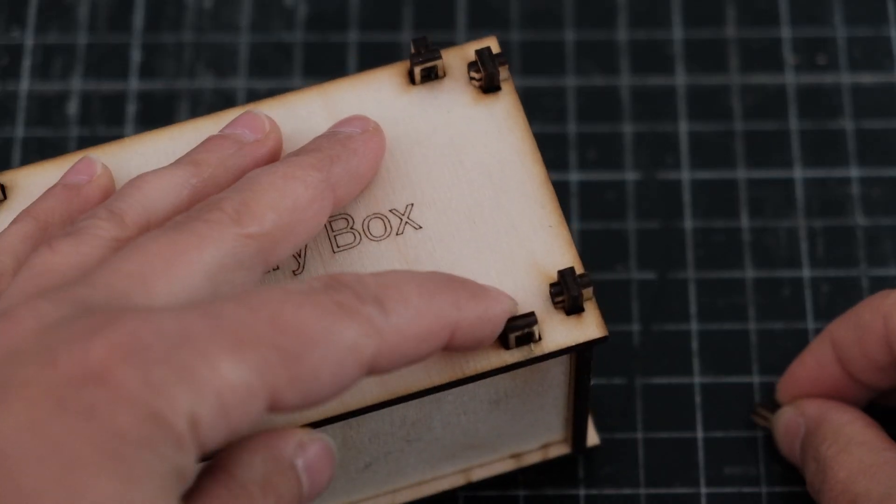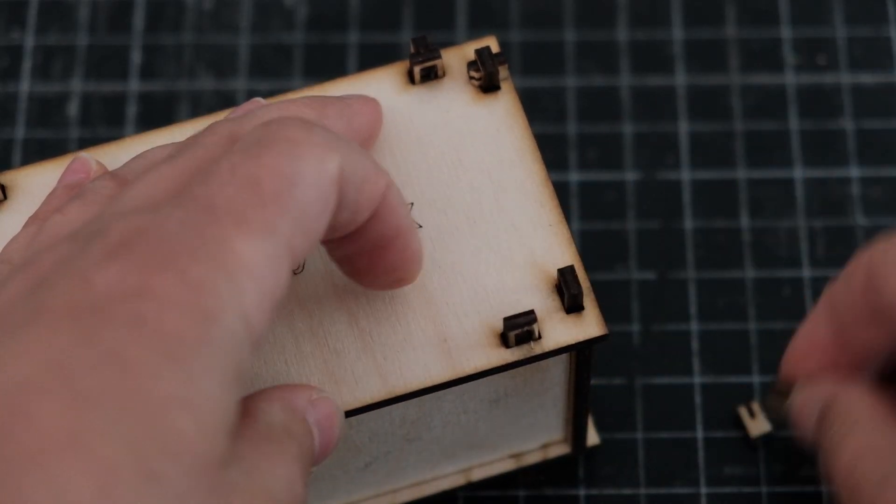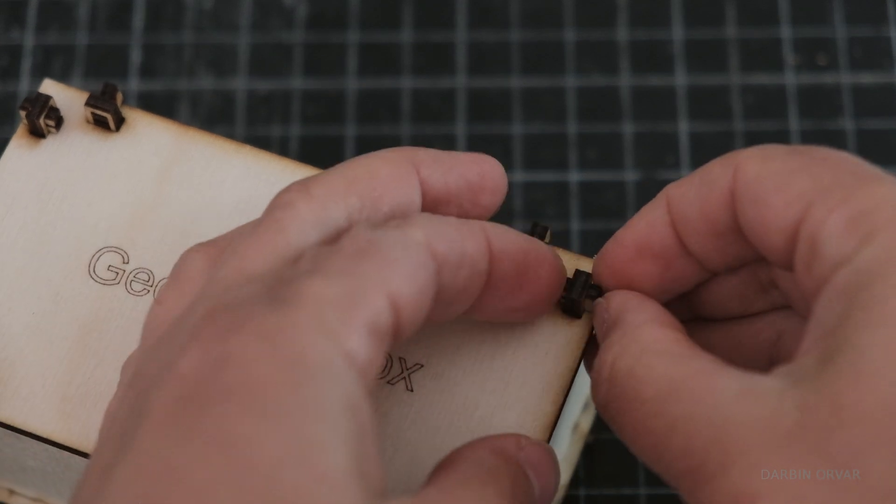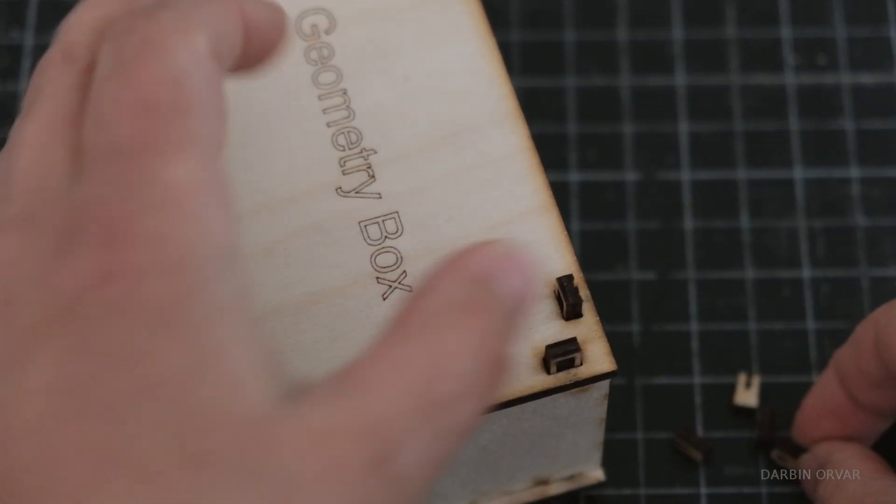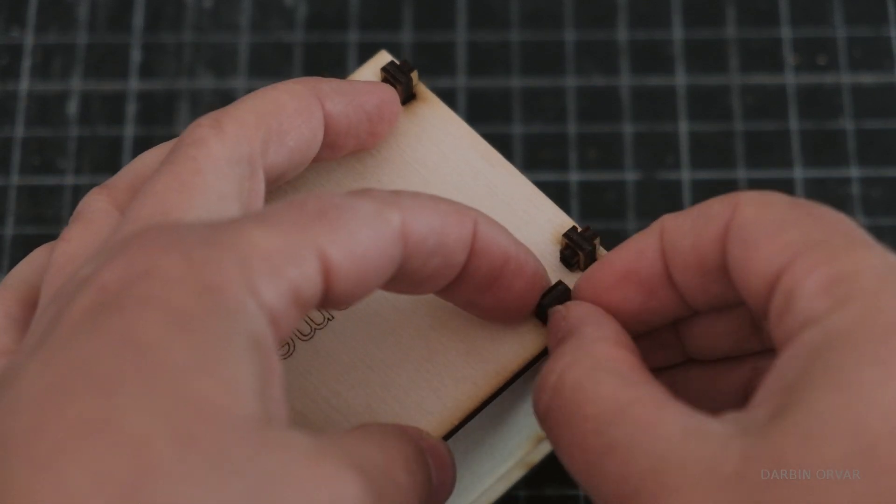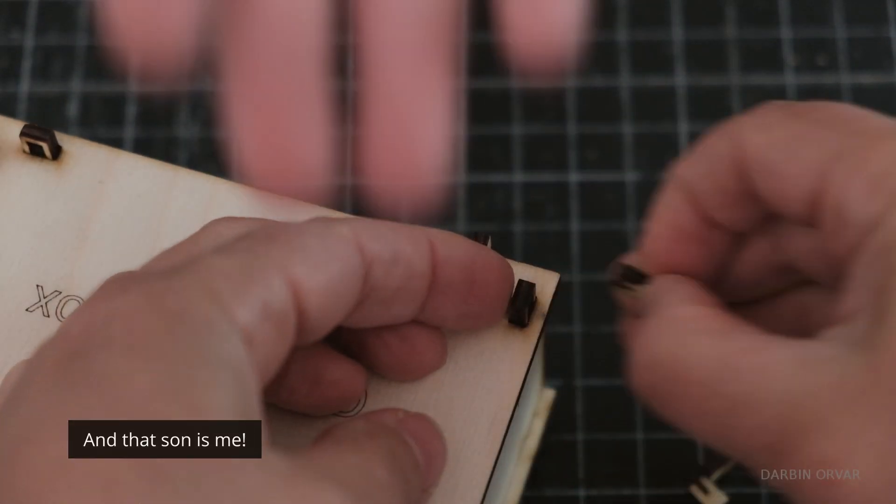You could have these wedges just on one side. However, my son really enjoys opening up these, and so he wanted a box that had these wedges both at the top and at the bottom. And that son is me!